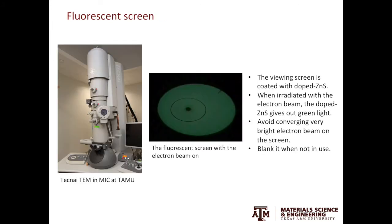On the left is a photograph of the TEM in MIC at Texas A&M University, and the fishbowl-shaped chamber is the viewing chamber. If you remove the blank and turn on the beam, you can see the illumination, and the light is green. The screen is coated with doped zinc sulfide, and when zinc sulfide is irradiated with the electron beam, it will give off a green light which the human eyes can see.